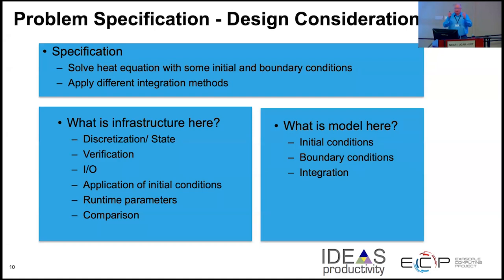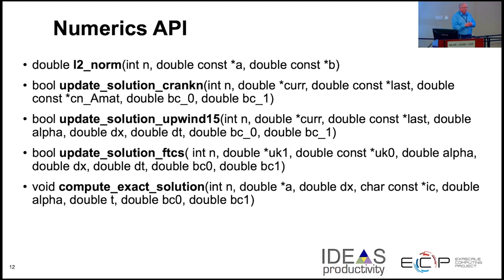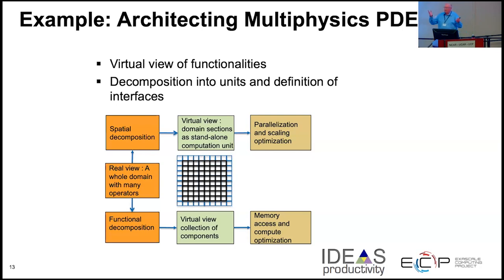The model has the actual initial conditions, boundary conditions, and the integrator — the algorithm we're going to use to integrate the heat equation. We can define some APIs for the infrastructure side: processing arguments, initialization, setting initial conditions. Then we have APIs for the model side: we're going to have the option to do Crank-Nicolson, upwind, or FTCS, we have an exact solution for this problem, and we compute the L2 norm to figure out how we're doing. That's the model side, and we can implement those things.